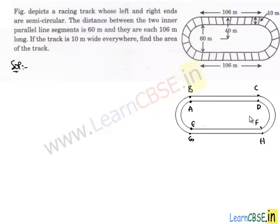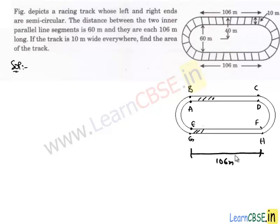Here we have a racing track whose left and right ends are semicircular. If you look at the figure, we will get two rectangles — rectangle ABCD and another rectangle EFGH — and both are equal rectangles. So we have to find out the area of the track. The area of the track is the area of these rectangles plus the area of the in-between semicircular arcs. Here we are given the length of each rectangle which is 106 meters and its breadth is equal to the width of the track, which is 10 meters.